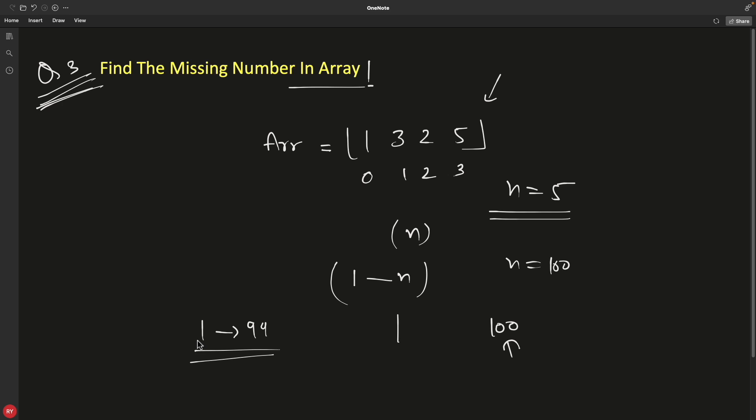Or it's possible that you have 2 to 100 with no missing numbers, and if this is your array then 1 is missing.